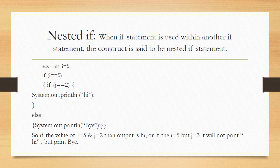Nested if: when an if statement is used within another if, the construct is called a nested if statement. Example: int i = 5; if (i == 5) { if (j == 2) println("hi"); else println("bye"); }. If i is 5 and j equals 2, it prints 'hi'; otherwise it prints 'bye'. So if i is 5 but j is 3, it will not print 'hi' but rather 'bye'.